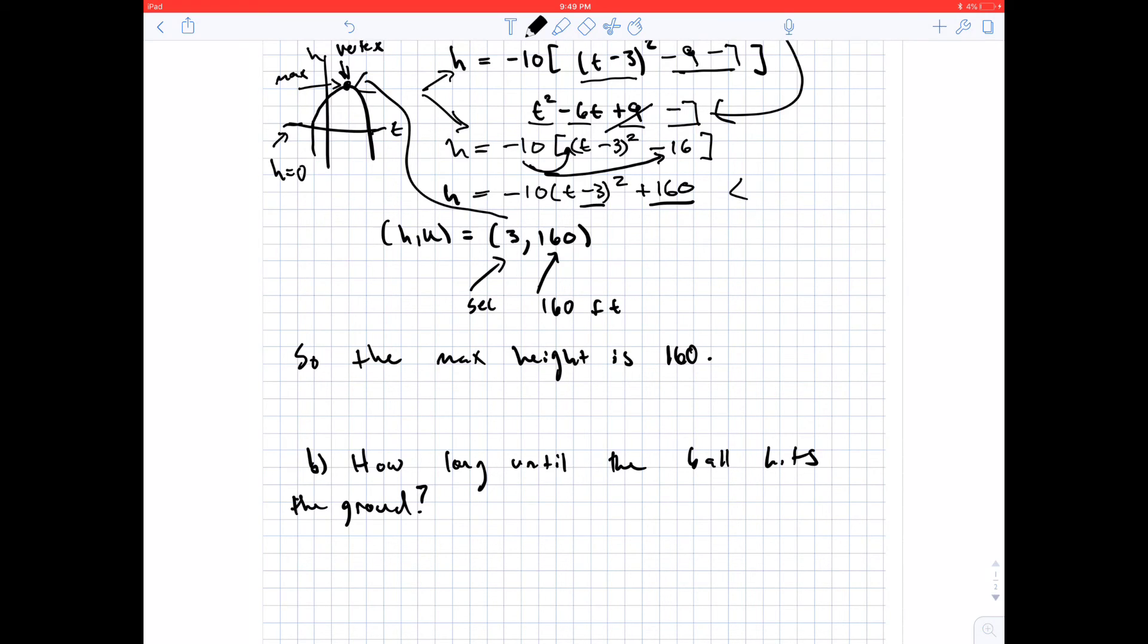If we treat the ground as 0 height. So let's go ahead and do that. And we'll just go ahead and use this equation here, this representation of our model. And so we set h equal to 0. We have negative 10 times t minus 3 squared plus 160. And we can subtract 160 from both sides. And we're going to get negative 160 equals negative 10 times t minus 3 squared.